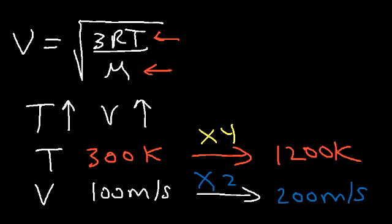If you increase the Kelvin temperature by a factor of 9, the velocity increases by 3 because the square root of 9 is 3. If you increase it by 16, the velocity increases by a factor of 4 because the square root of 16 is 4. If you double the Kelvin temperature, the velocity increases by the square root of 2. Likewise, if you increase the temperature by 3, the velocity increases by the square root of 3. You have to incorporate the square root because it's part of the equation.